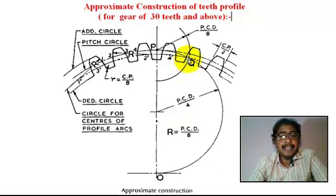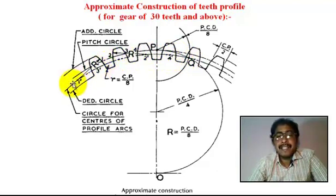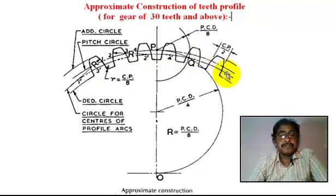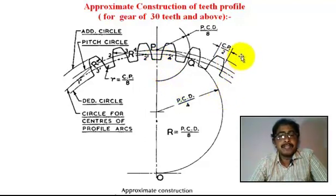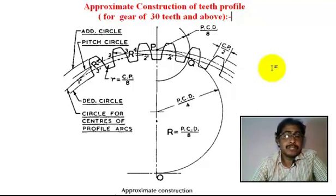With the pencil pointer at point Q, we draw a circle. This circle is called the base circle. Now we take a measurement of CP by 2 in the pencil compass.